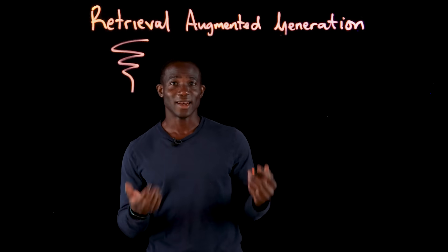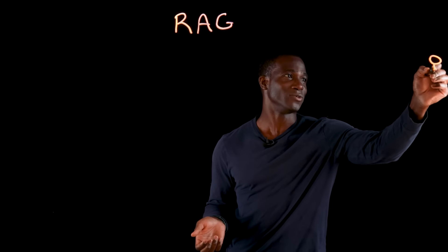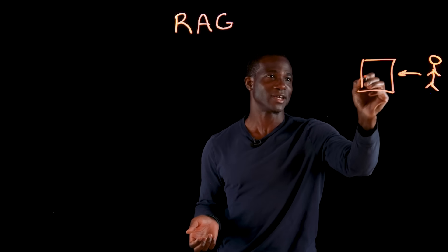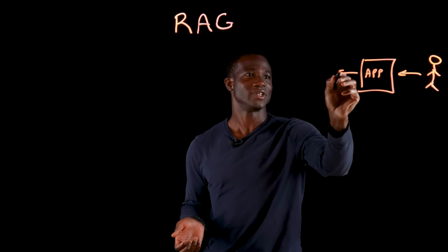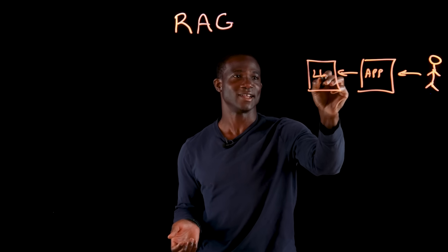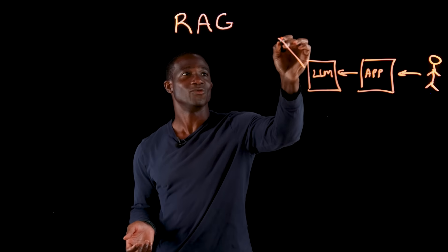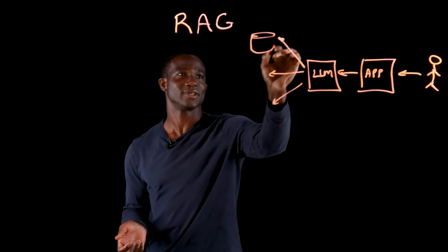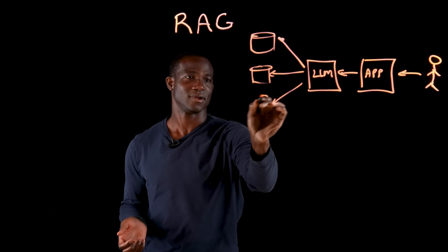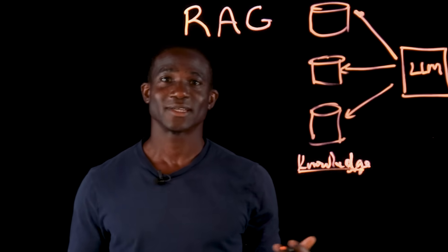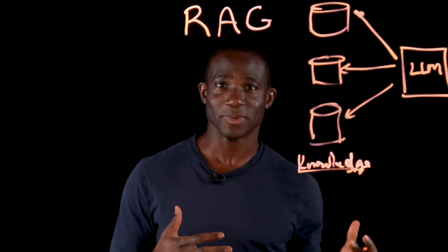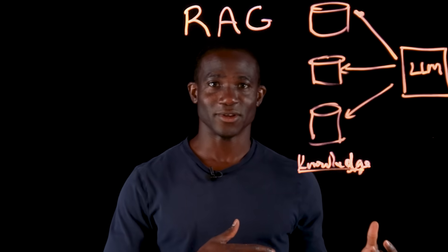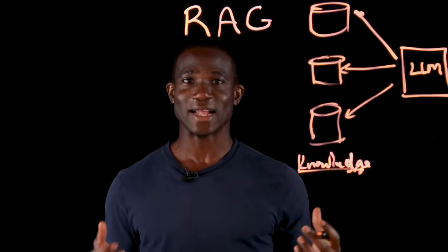In any generic RAG system, a user comes in with a query and comes to your application, which itself is connected to your LLM, and you want to provide that LLM access to different knowledge sources. RAG works by fetching relevant chunks from your knowledge base and feeding them into the LLM. The quality of that retrieval method determines how factual and relevant the answers will be.